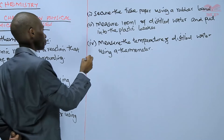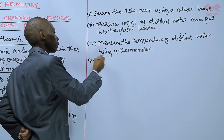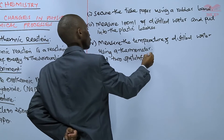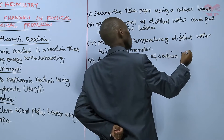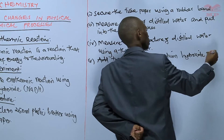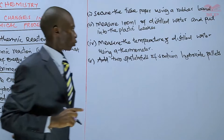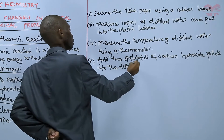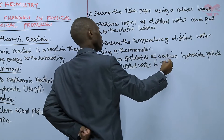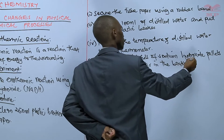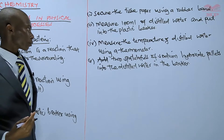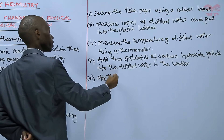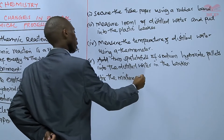Procedure number five: add two spatula folds of sodium hydroxide pellets into the distilled water in the beaker. Procedure number six: stir the mixture until it dissolves using a thermometer.